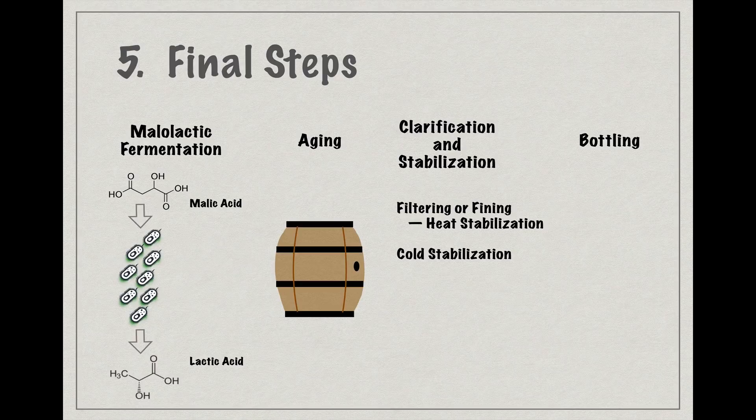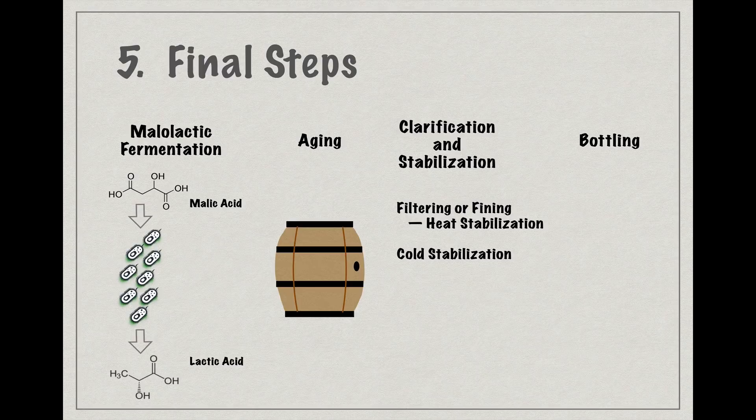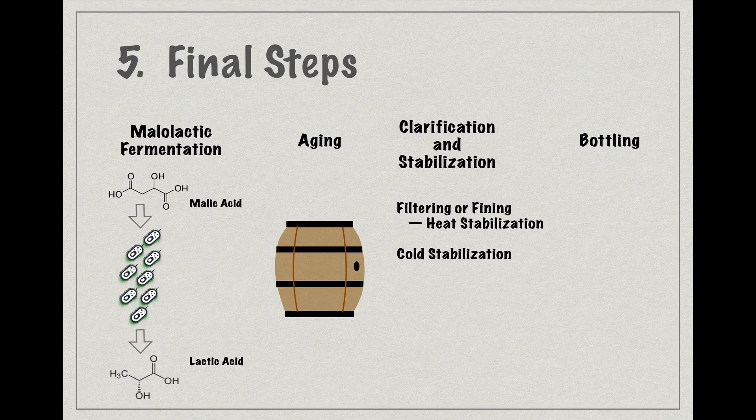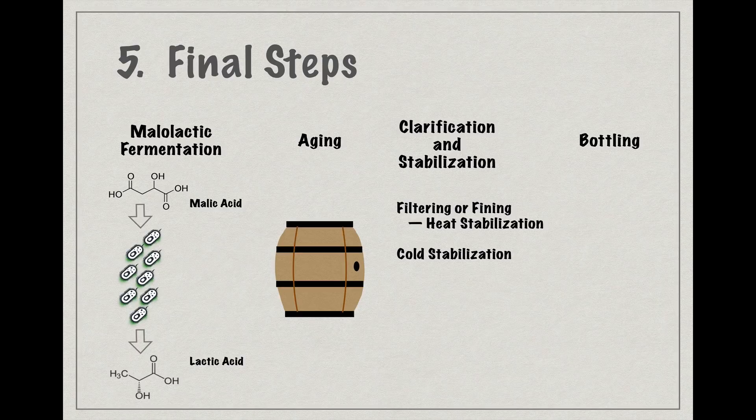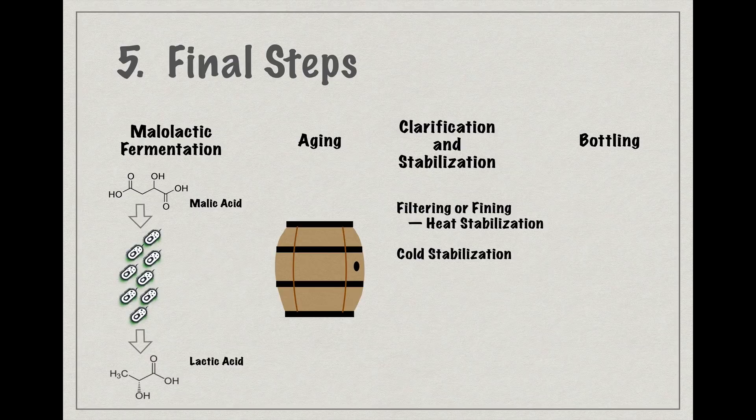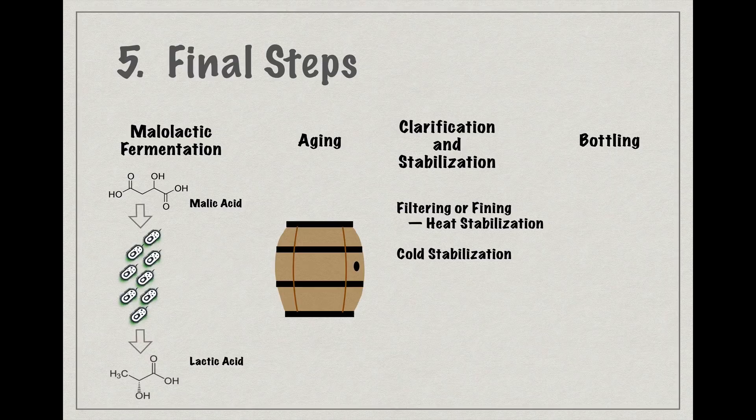Though this is much more of an issue in white wines, some of the particles in solution are proteins that can turn color and brown when exposed to heat. So fining or filtering these particles out effectively heat stabilizes the wine and prevents unwanted browning later. The wine can also be cold-stabilized by lowering the temperature to precipitate out tartrate crystals or wine diamonds that might otherwise form in the bottle and be off-putting to consumers.